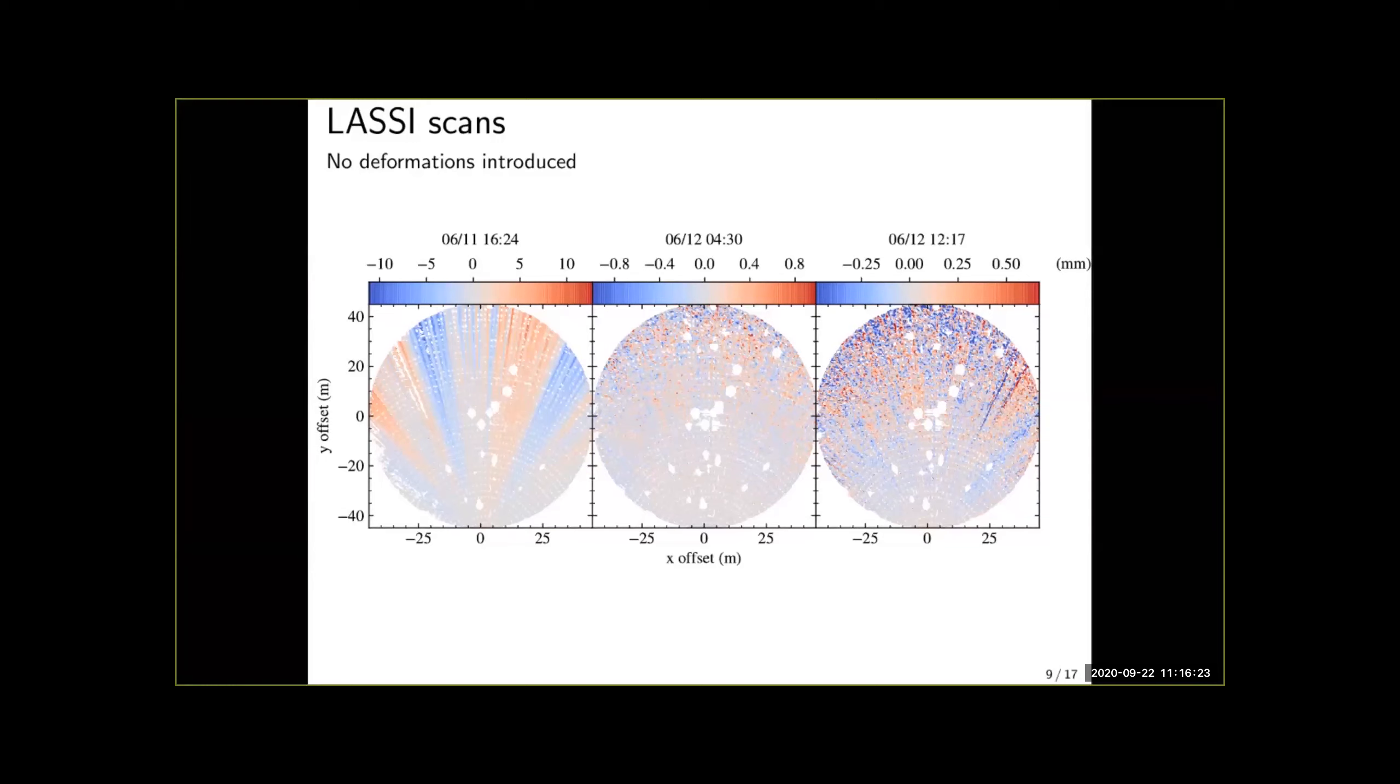And what's happening here is that the structure is vibrating and this is picked up by the scanner. So instead of seeing the surface what we're seeing is just artifacts due to the movement of the dish relative to the scanner.